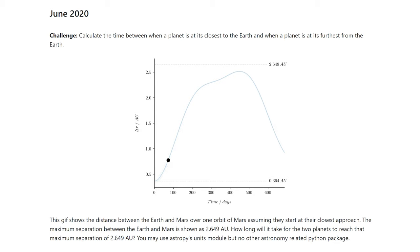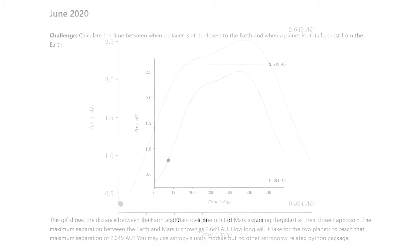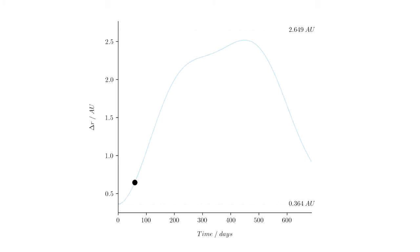This figure shows the distance between the Earth and Mars over 687 days, which is the length of the orbit of Mars. It assumes they start at their closest approach, which is 0.364 astronomical units apart.